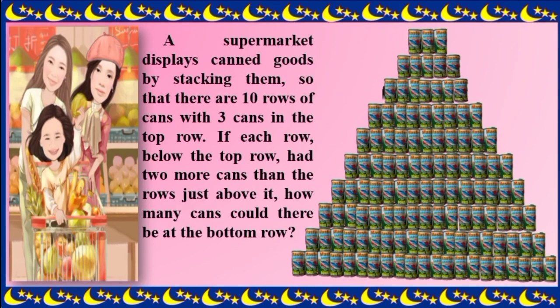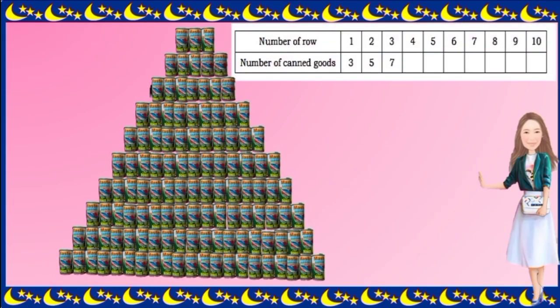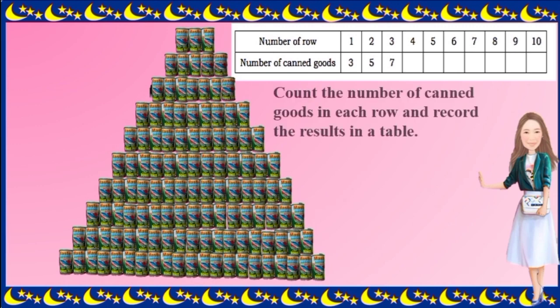The first row has 3 cans, and the second row has two more cans than the upper row. Starting from the top row, the number of cans in each row can be listed as follows. Count the numbers of canned goods in each row and record the results in the table. For the first row we have 3, second row 5, third row 7.